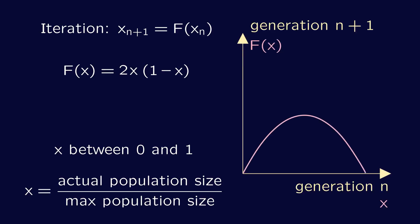Its graph, as you can see on the right, is hump shaped. This function f is called the logistic map.